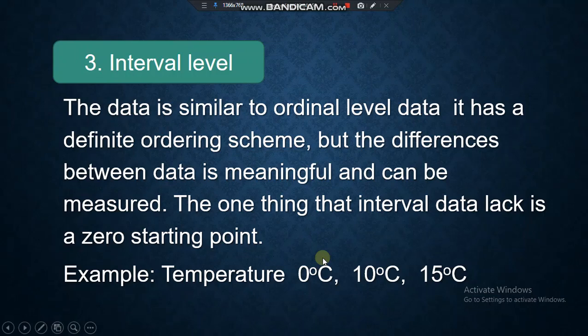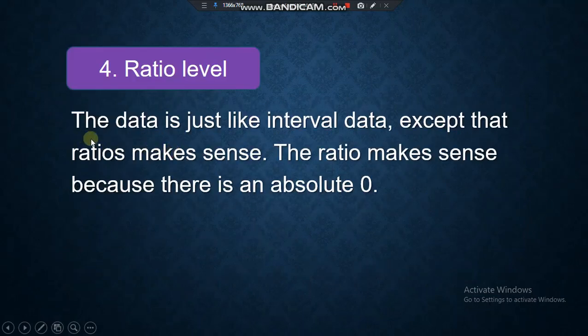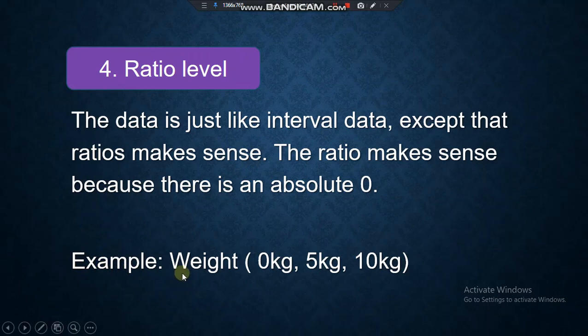And let's go to the fourth one. Ratio level. The data is just like interval data. Except that ratios make sense. The ratio makes sense because there is an absolute zero. Remember, in the interval level, there is no absolute zero. But in this case, ratio level has an absolute zero. Example: weight.